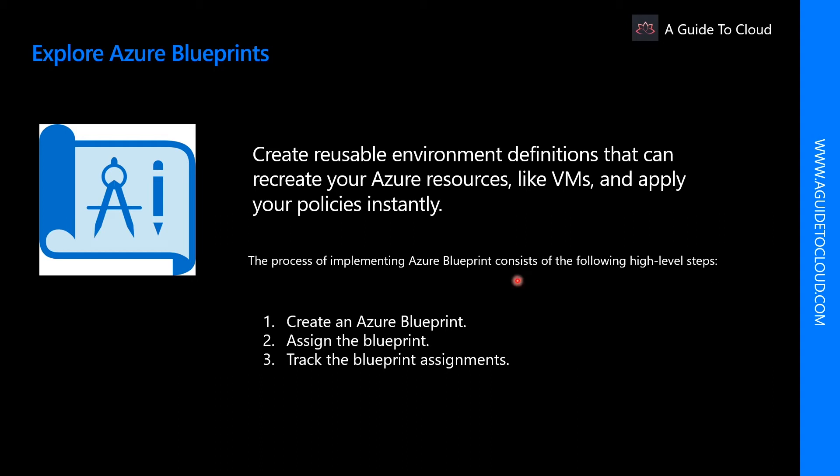So what is the process of implementing Azure Blueprint? The first step is to create an Azure Blueprint. Then you assign the Blueprint. And finally, you can track the Blueprint assignments. With Azure Blueprint, the relationship between the Blueprint definition and the Blueprint assignment is preserved. This connection supports improved deployment tracking and auditing.